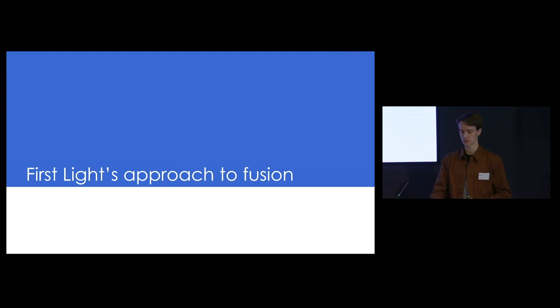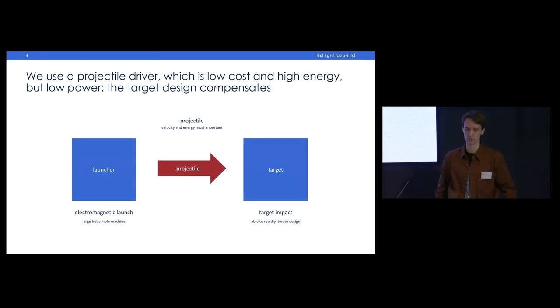First Light's approach to fusion: we are using a high velocity projectile as a new driver for inertial fusion. We launch the projectile electromagnetically - a big pulsed power machine, a capacitor bank which discharges very quickly, makes extreme magnetic fields, and launches a projectile with J cross B force, Lorentz force, like a rail gun. The projectile is like the spark plug in an internal combustion engine - the driver puts the energy in, triggers the fuel to burn, then you get energy release.